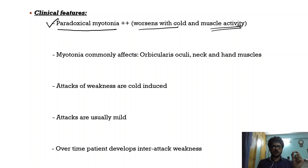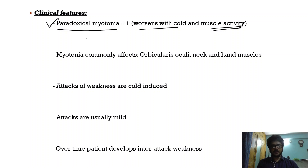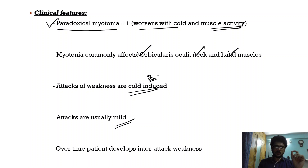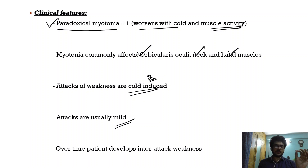This is very important: myotonia improves with muscle activity (warm-up phenomenon), whereas in paradoxical myotonia it worsens with muscle activity. This myotonia usually affects the orbicularis oculi, the neck, and hand muscles. Other than the myotonia, patients can also develop periodic weakness, which is usually very mild and triggered by cold. Patients can also develop a progressive myopathy causing inter-attack weakness.